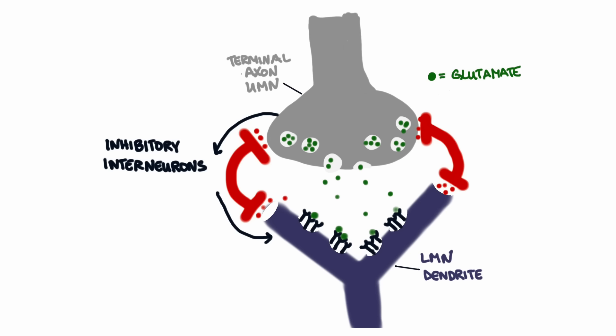This inhibition regulates reflexes as well. By inhibiting the lower motor neuron, upper motor neurons prevent it from overreacting to stimuli, ensuring that reflexes are not over-exaggerated.